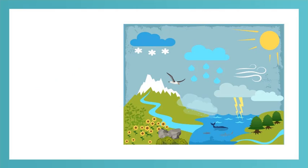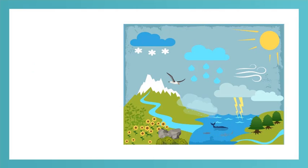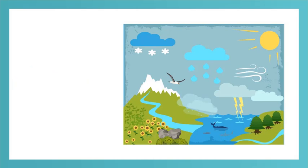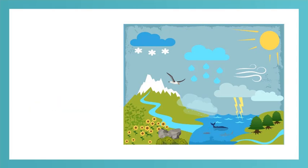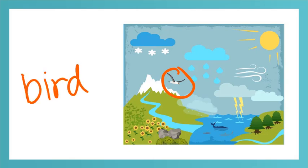What lives in the ocean? What do we see here? We have a whale. W-H-A-L-E. Whale. What else do you see? Did you see the shark? Yikes! S-H-A-R-K. Shark. We also have a fish. F-I-S-H. Fish. What do you see in our picture that lives above the ocean and flies around in the sky? Did you see the bird? B-I-R-D. Bird.